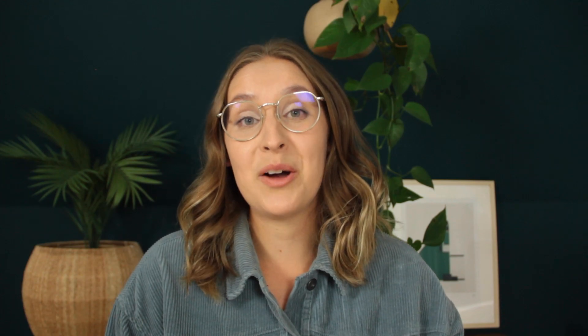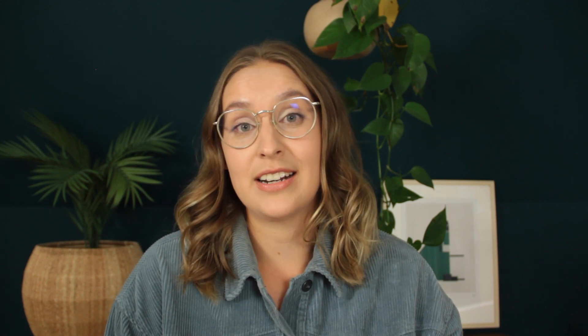So how do you actually come up with ideas for everything to write for your actual posts? I know this can be a really big sticking point for a lot of people, including me sometimes. What I do is use a really common marketing strategy called content pillars — basically different categories of content that I like to structure my posts around.